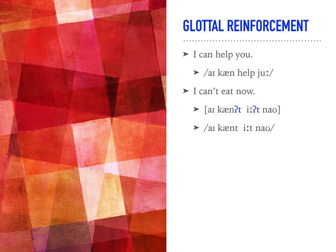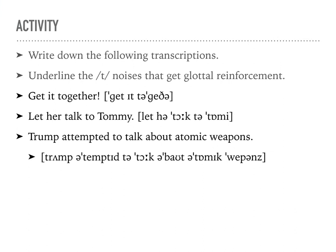If we look at the rules we learned earlier, we can now practice when we do and don't have glottal reinforcement. In this activity, I want you to write down the following transcriptions and underline the T noises that get glottal reinforcement. Our first sentence is 'get it together'. The second sentence is 'let her talk to Tommy'. The third sentence is 'Trump attempted to talk about atomic weapons'. Write down the transcriptions on your own sheet of paper, then pause this tape. Remember, these are not T noises at the start of a word, and they're also not T noises on stressed syllables.